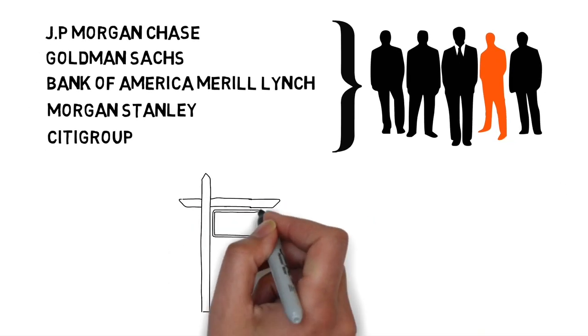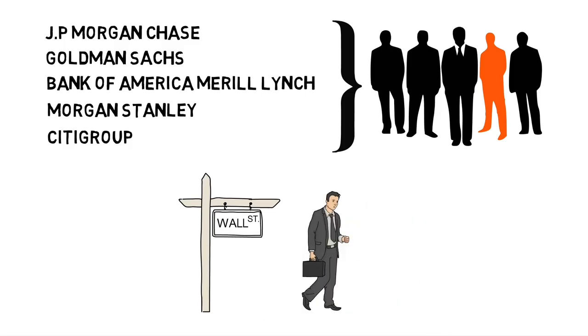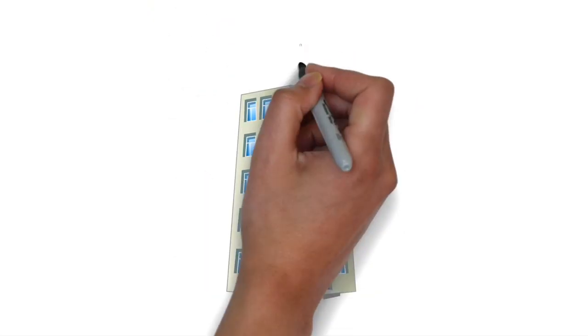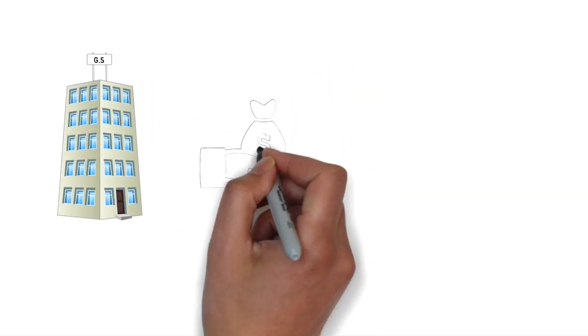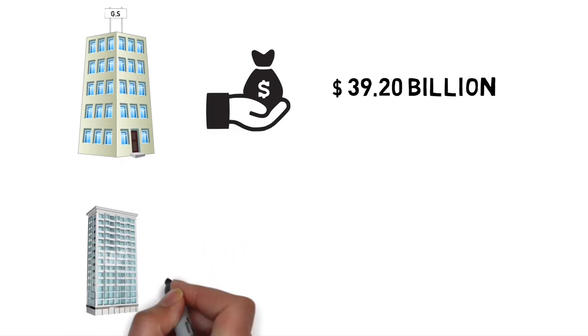For people on Wall Street, these are regarded as highly sought after employers offering big bucks. In 2015, Goldman Sachs brought around $39.2 billion in revenue, and in the same period, JP Morgan Chase brought in around $96.6 billion in revenues.